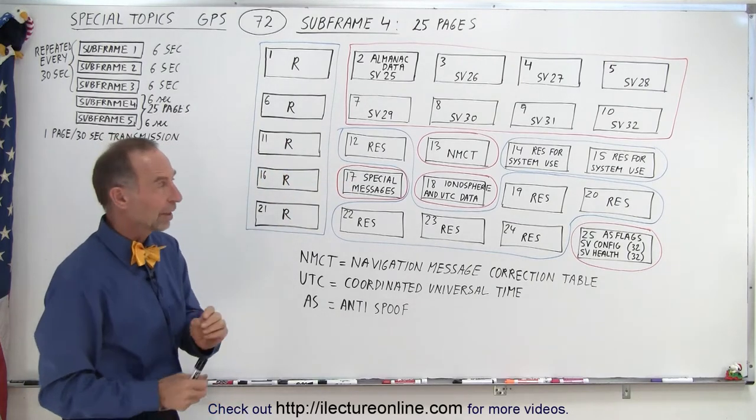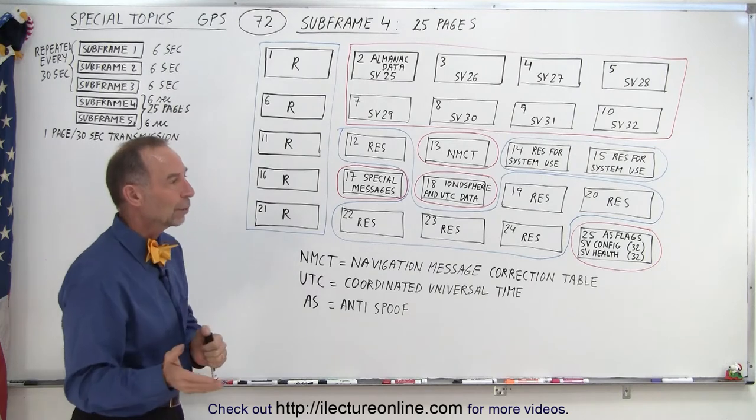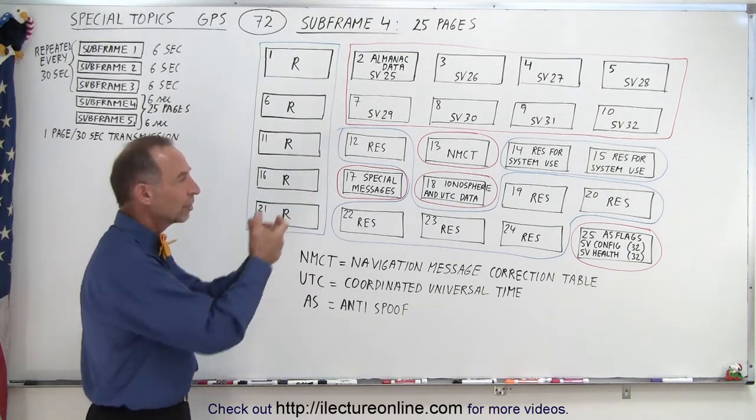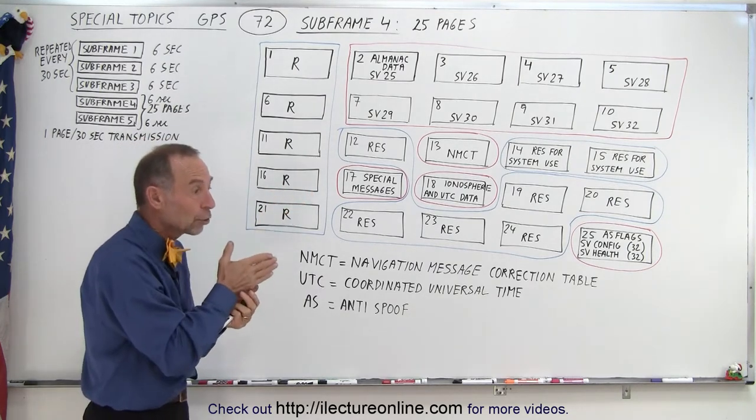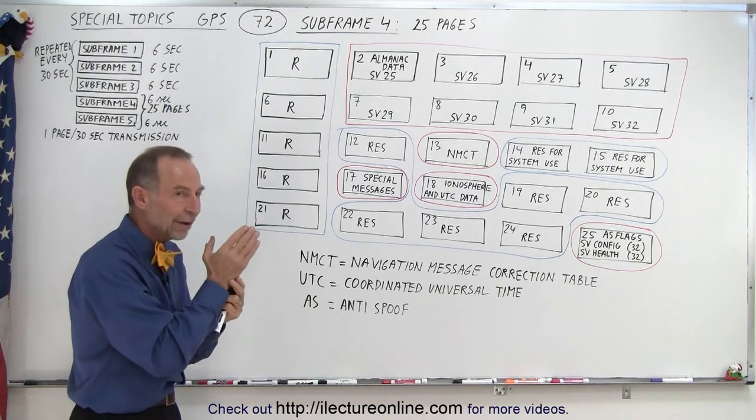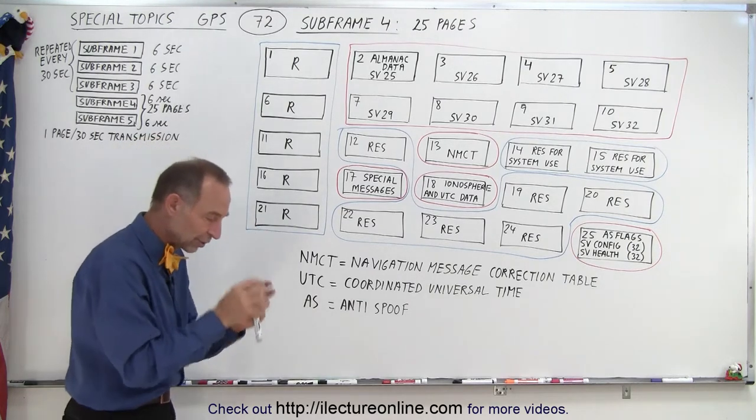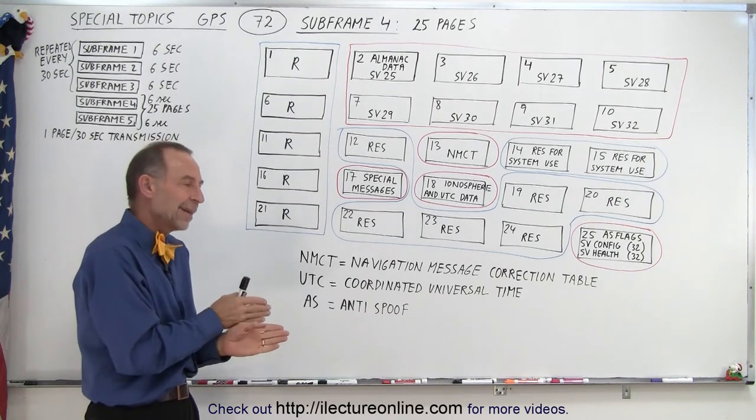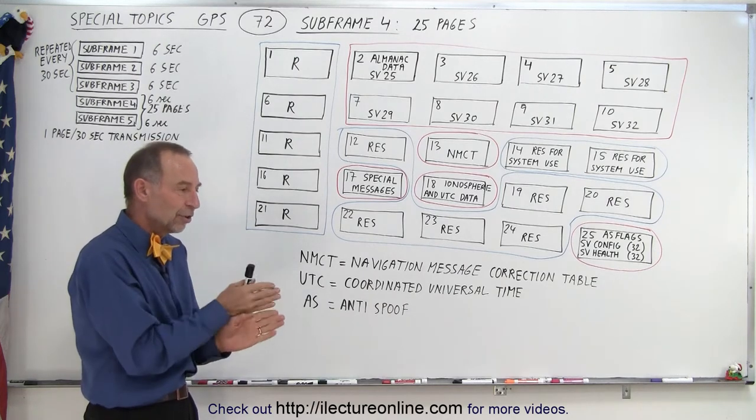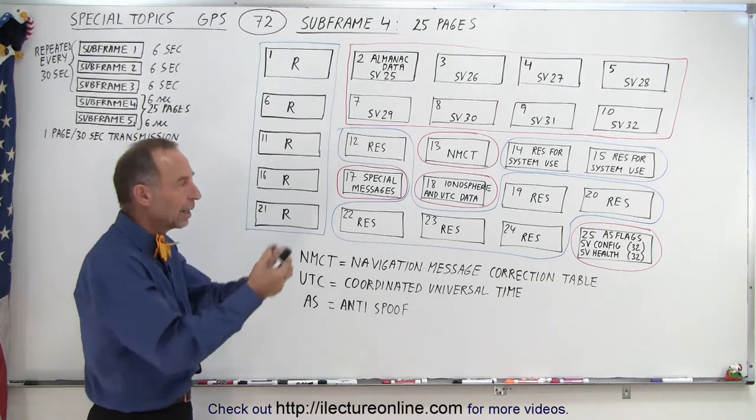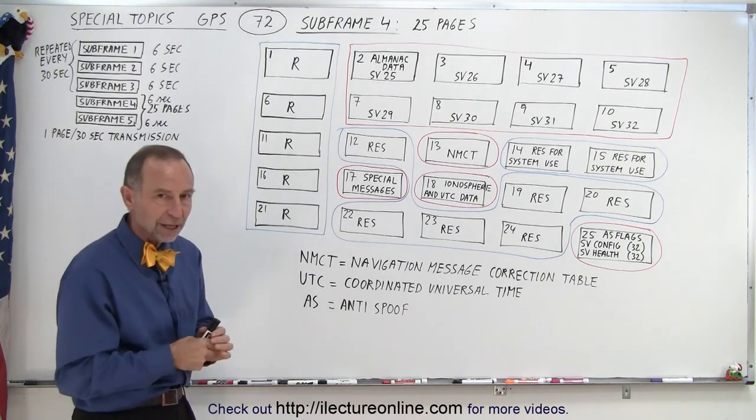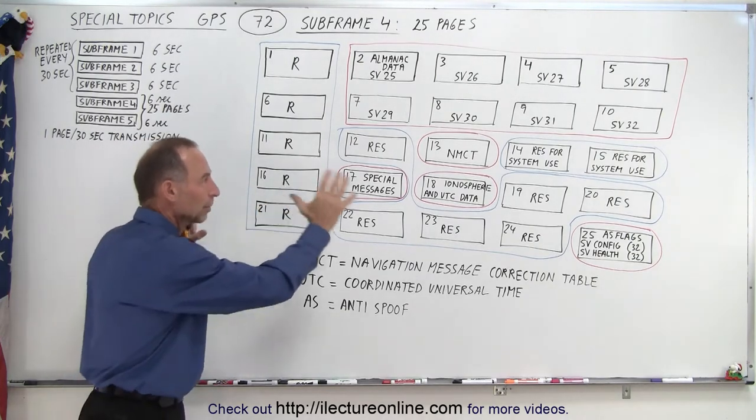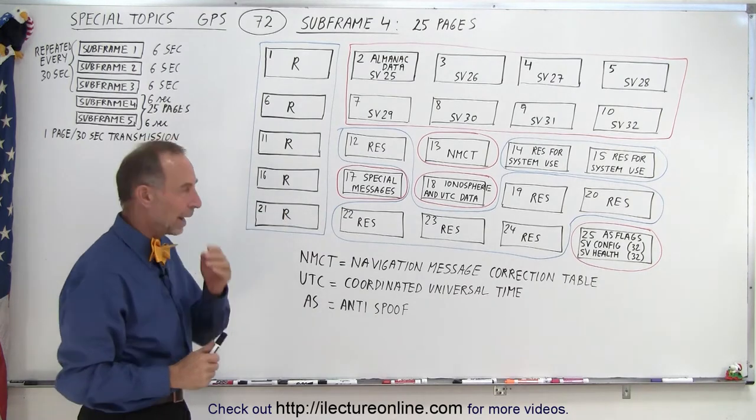Now it's not as accurate as the ephemeris data, so once you lock onto a satellite and begin to download the ephemeris data, you can correct the orbital parameters to make them very accurate and correct your exact position. So sometimes it takes a bit of time before your position is known extremely accurately because you require that ephemeris data, but at least the almanac data will get you into the ballpark of where the SVs are at.